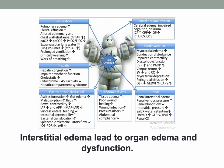Interstitial edema leads to organ edema and dysfunction. In the respiratory system, for instance, it leads to pulmonary edema, increased pleural effusion, altered pulmonary and chest wall elastance, resulting in prolonged ventilation, difficult weaning, and increased work of breathing.